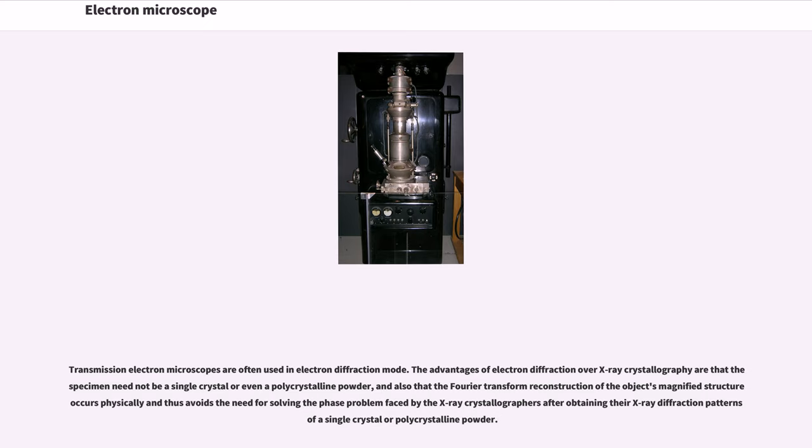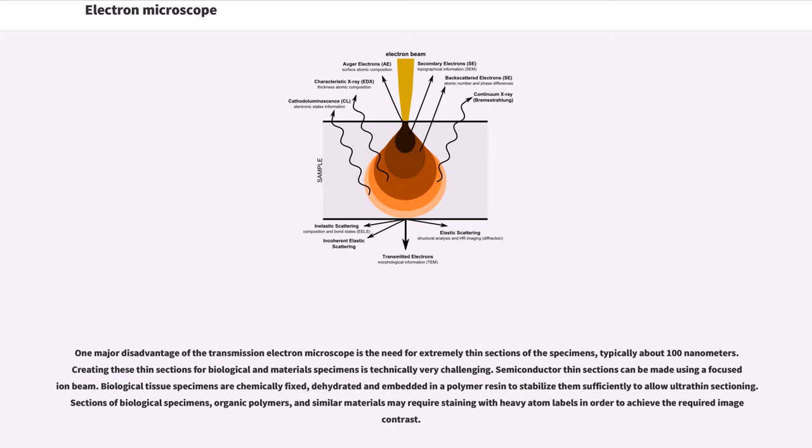One major disadvantage of the transmission electron microscope is the need for extremely thin sections of the specimens, typically about 100 nanometers. Creating these thin sections for biological and materials specimens is technically very challenging.